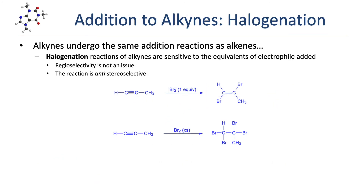Alkynes also undergo halogenation. Regioselectivity is of course not a concern, since the same group is being added to both carbons. The reaction is sensitive to the number of equivalents of electrophile added. In the first example, one propyne is reacted with one equivalent of Br2, adding bromine across one of the carbon-carbon pi bonds. Remember that halogenation is anti-stereoselective, placing the two halogens on opposite sides of the pi bond. In the second example, one propyne is reacted with an excess of bromine, adding Br2 across both carbon-carbon pi bonds, forming a tetrahalide.